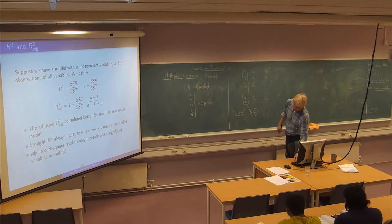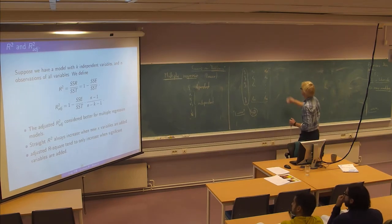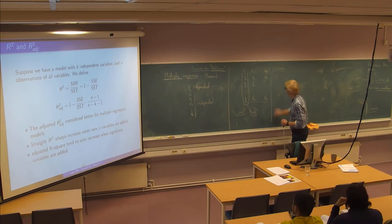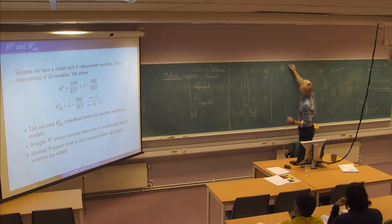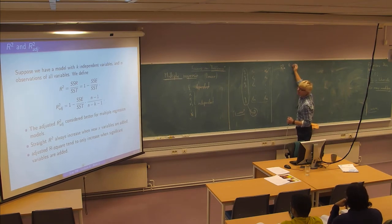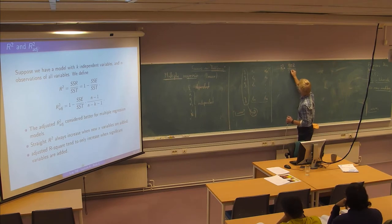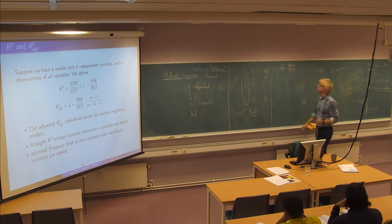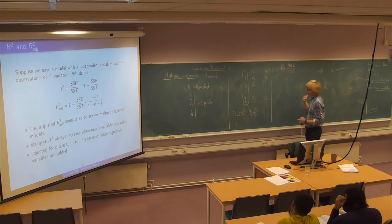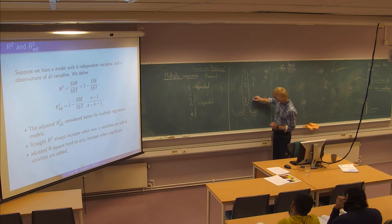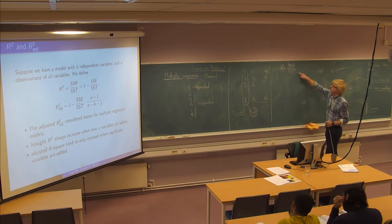And then we dive right into the R square which is the same as before. So it's just the amount of variation. It's SSR over SST.